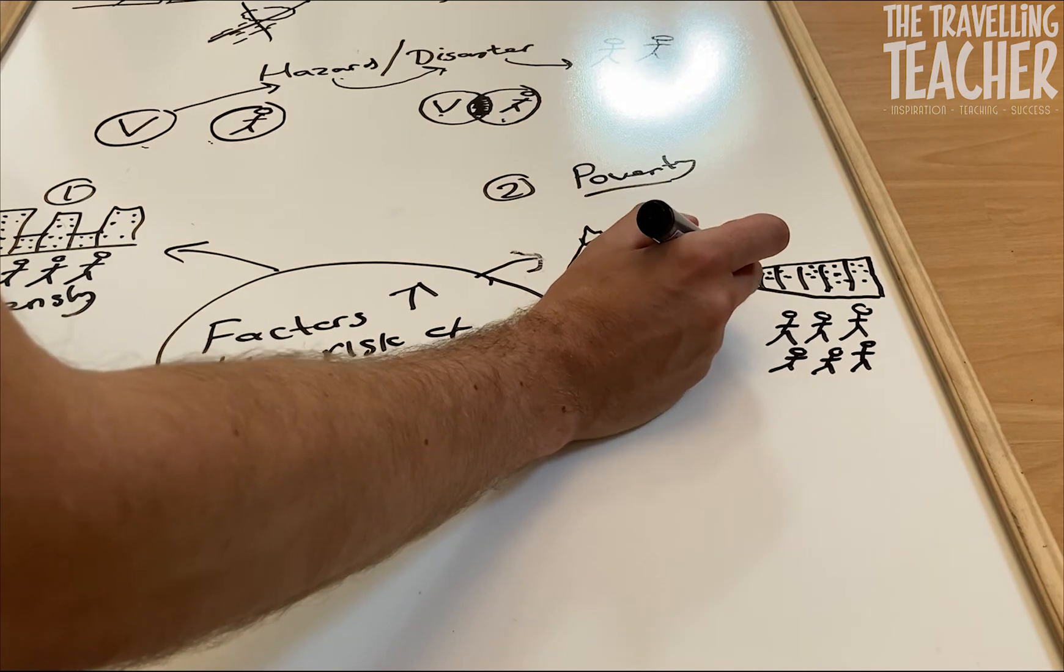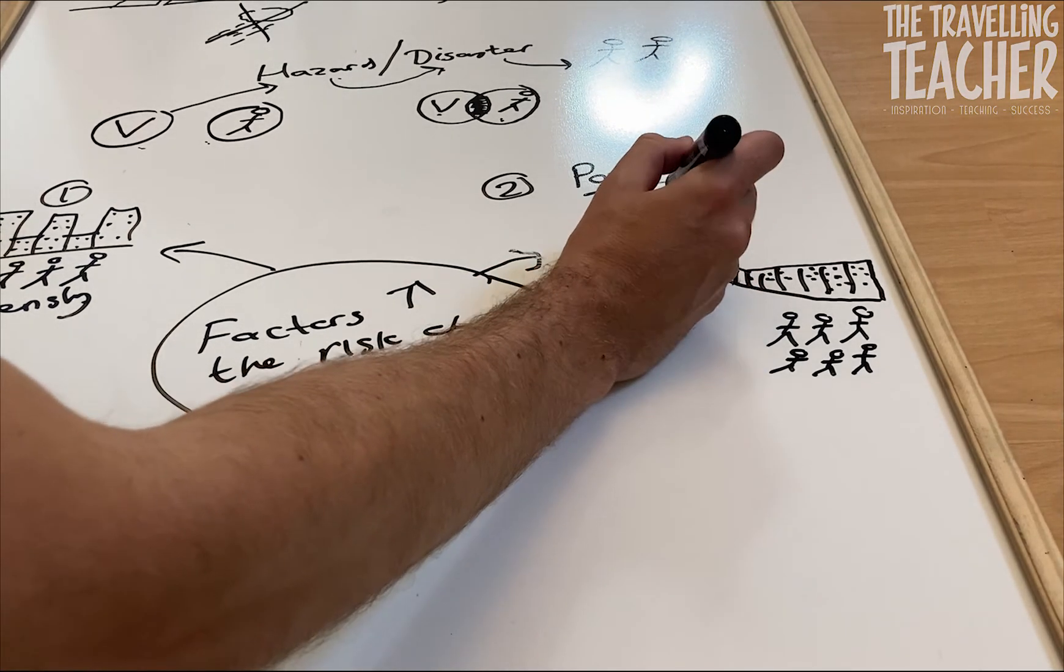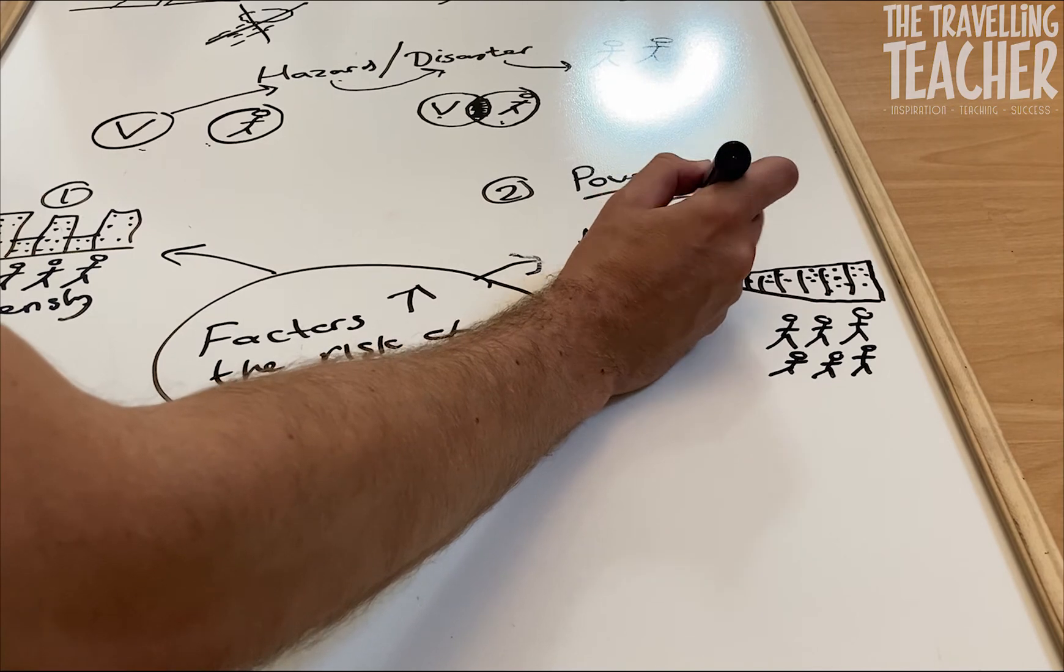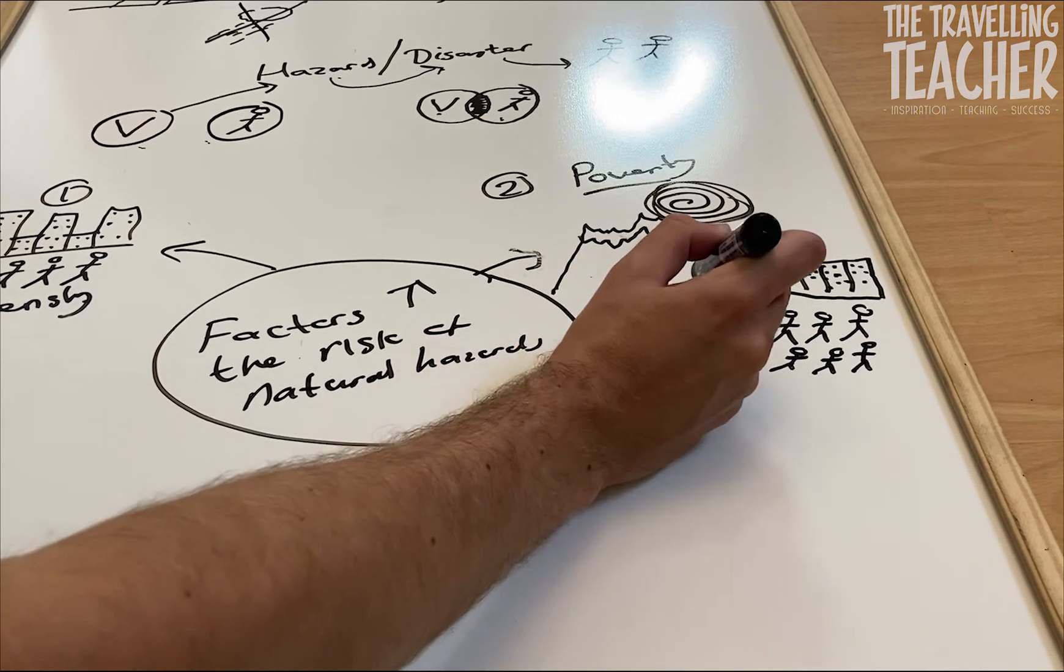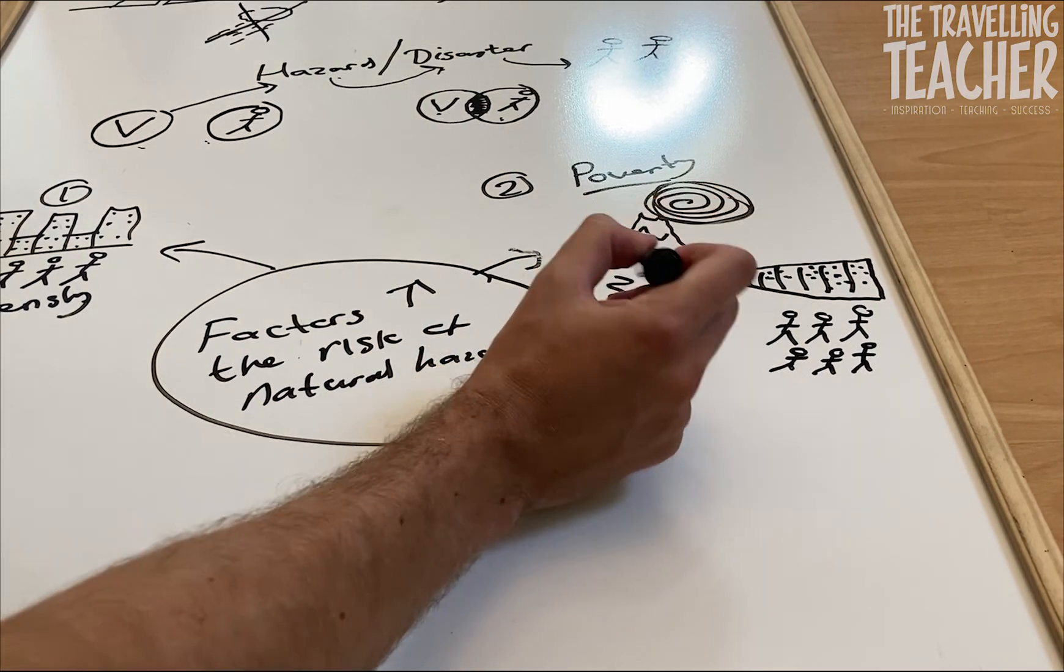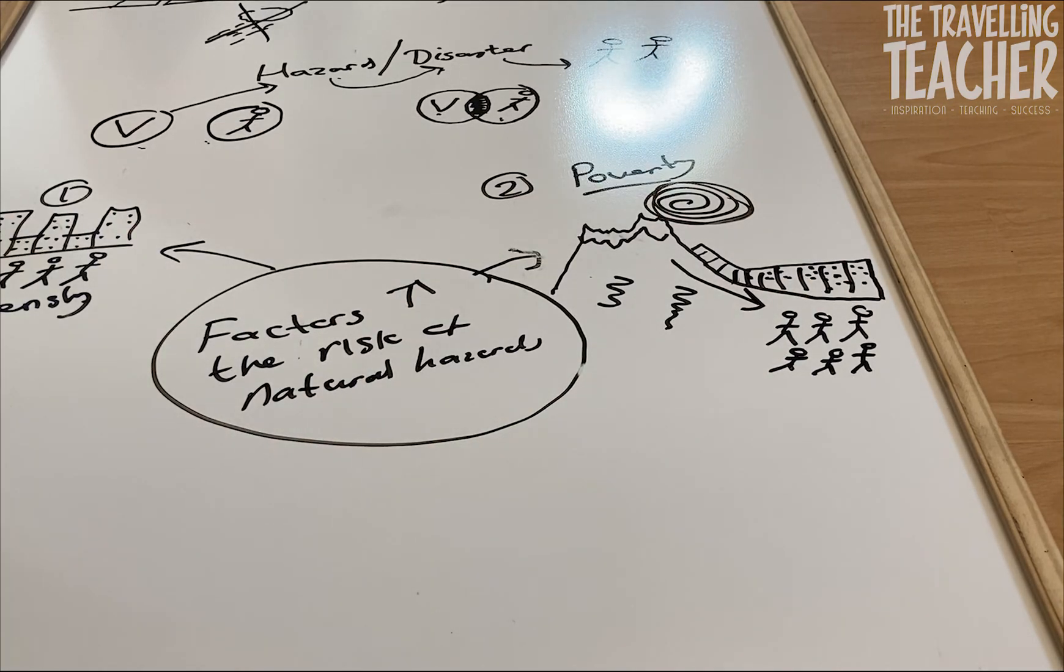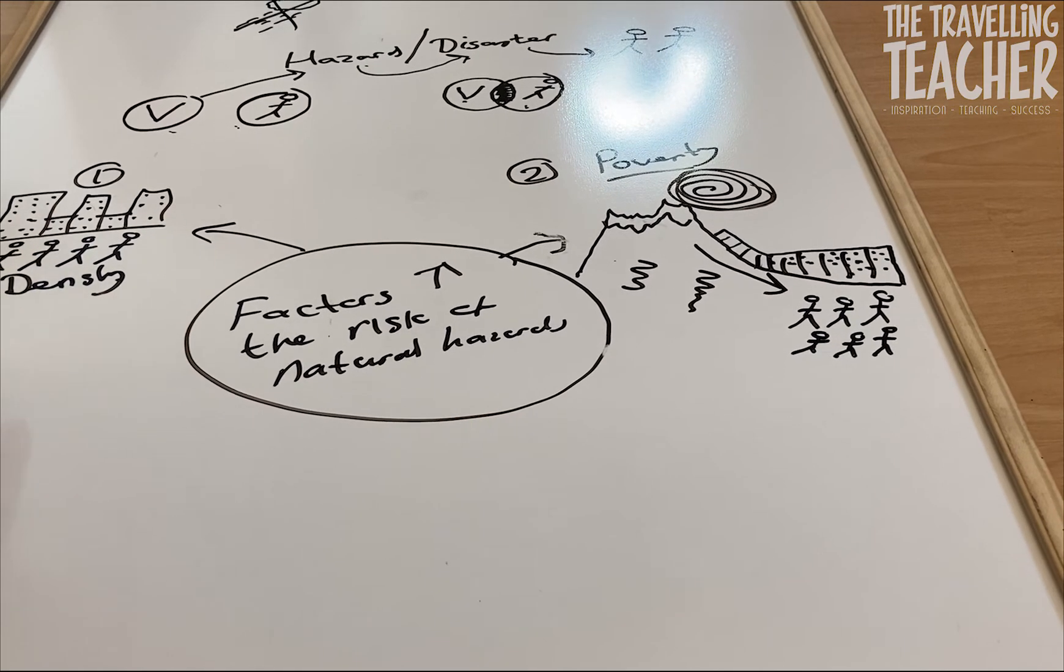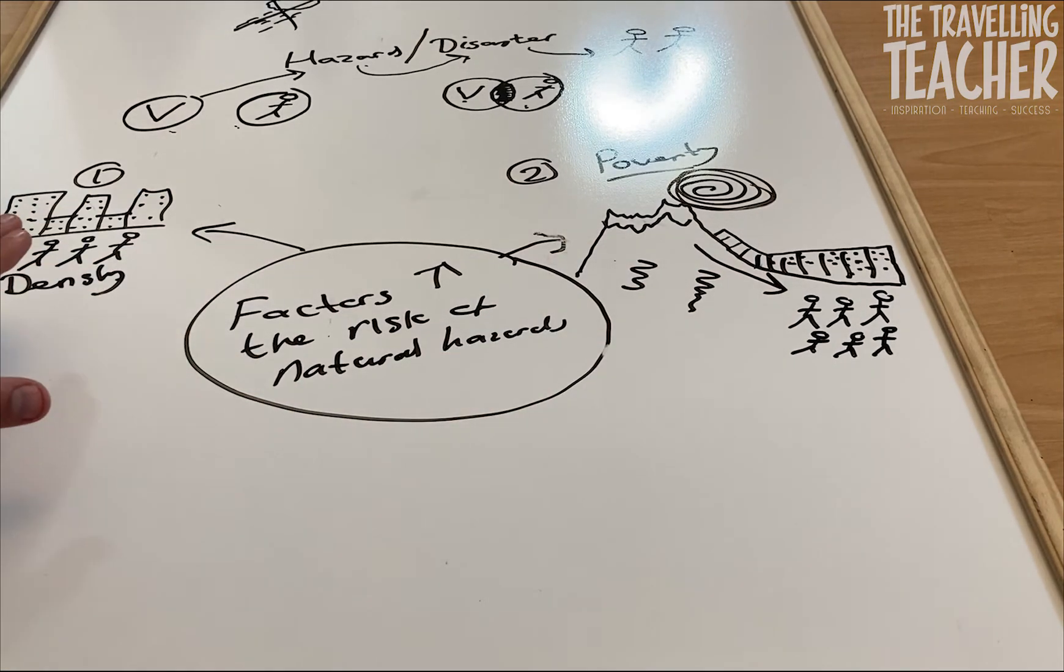So what people do, especially when a population increases, is they start to build on the side of mountains. Now of course this is dangerous, really dangerous, because all it takes maybe is a large storm or an earthquake which can both cause the side of that mountain to slide down in the form of a landslide. And obviously I'm sure most of you have made the link, there's a close link already between poverty and our first factor of urbanisation.